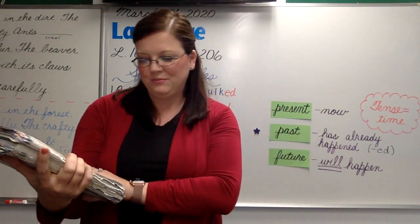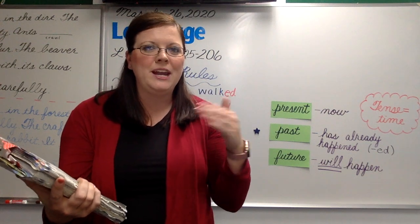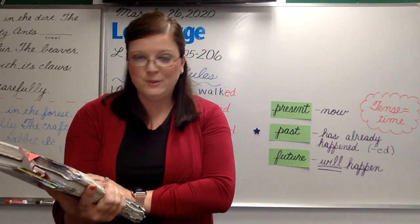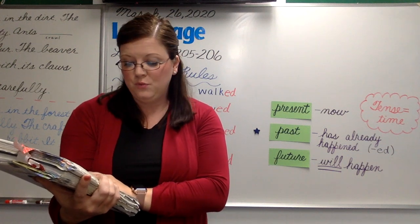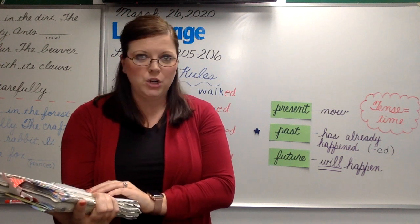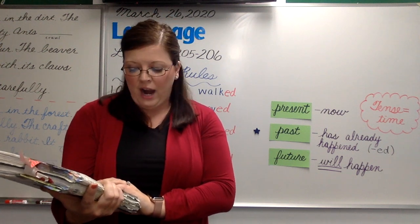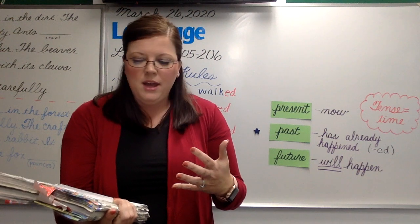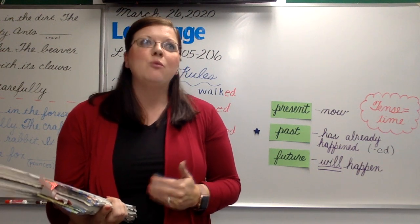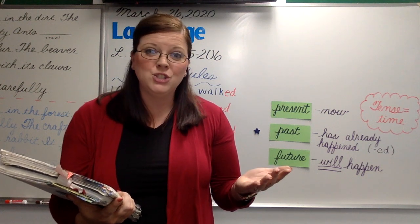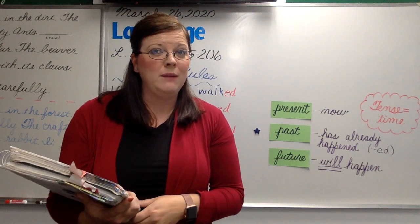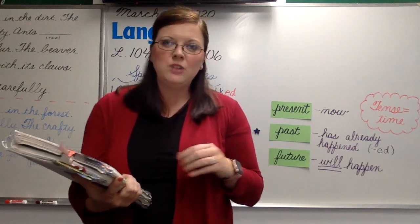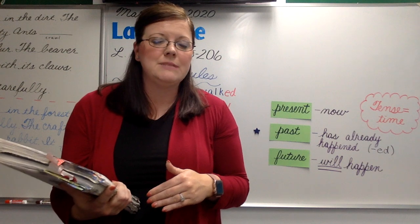What tense was that story in? It was present tense. The verbs I read were: leaves, goes, swirls, blinds, calls, hears, and turns. We usually use present tense if we're talking about a story happening in today's time. We would use past tense, like in our first story, if we're talking about a story in history, one that's already happened, or a fictional story. But if you're talking about something happening in our time, that story is usually written in present tense.